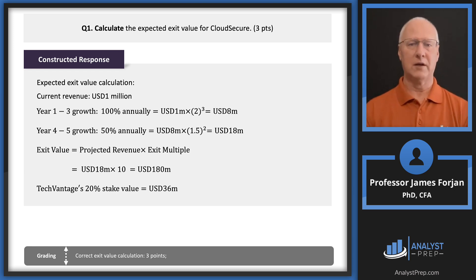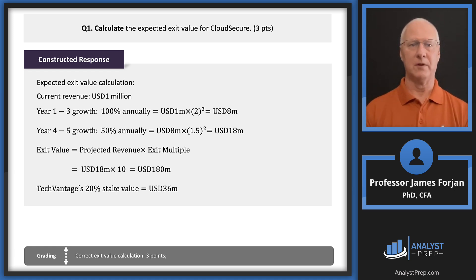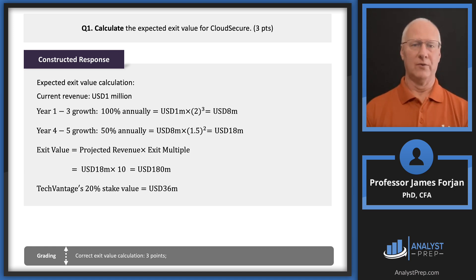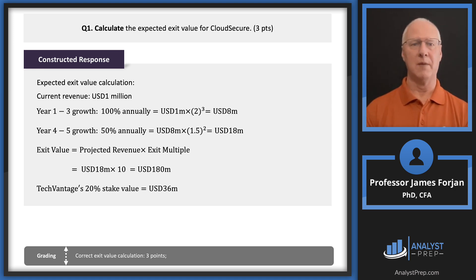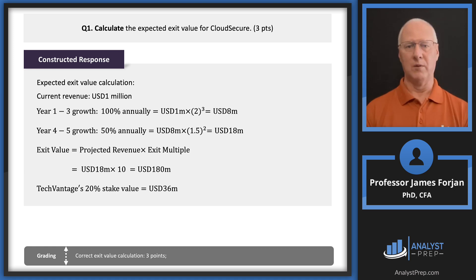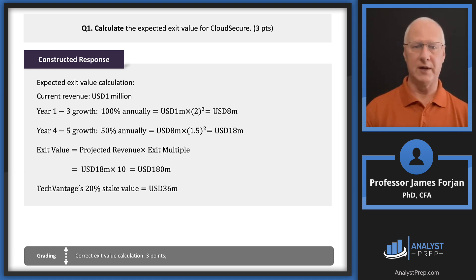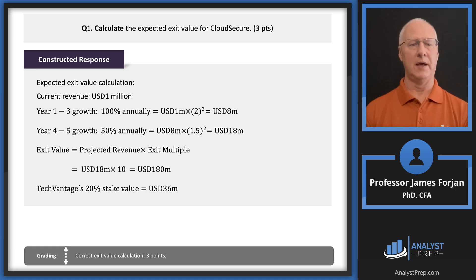Let's calculate the expected exit value for Cloud Secure. Current revenues are $1 million. We need to figure out what revenues will be at exit at end of year five. Using time value of money — $1M times (1 + 100%) compounded for three years gives $8 million, then compound at 50% growth for two more years. That brings us from $1 million today out to $18 million at the end of year five.